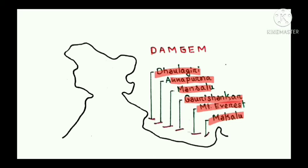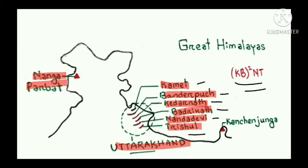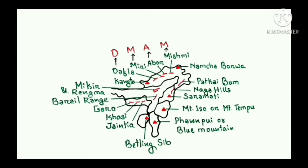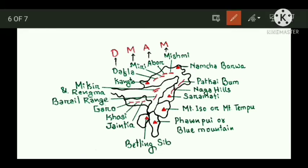Kanchenjunga, the second highest peak of India, is located in Sikkim. The Great Himalayas extend up to Namcha Barwa in Arunachal Pradesh, where you find other peaks of the Great Himalayas. The highest peak of Arunachal Pradesh is Kangto.